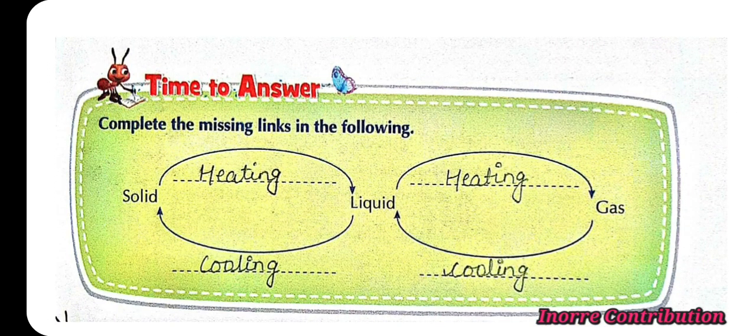Time to answer. Complete the missing links in the following. Solid to convert solid into liquid, we use the process heating, and liquid is again converted into solid with the process of cooling. The second one, liquid is converted into gas by process heating, and gas is converted into liquid with the process of cooling.